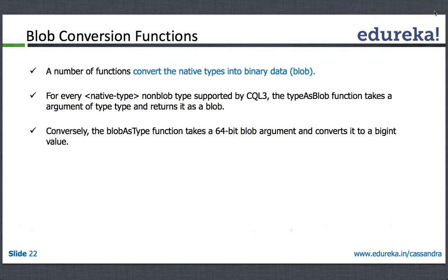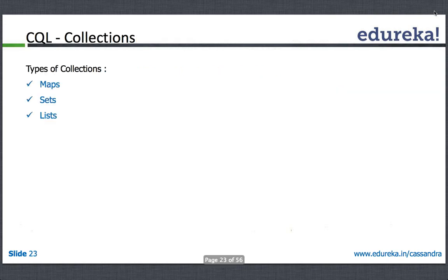Blob conversion functions are also supported in Cassandra's CQL interface. For every non-blob native type, there's a 'typeAsBlob' function that converts a native value into a blob. Conversely, 'blobAsType' functions are available to convert blob values back to int, string, or other types — useful when you know the original type and need to cast it.